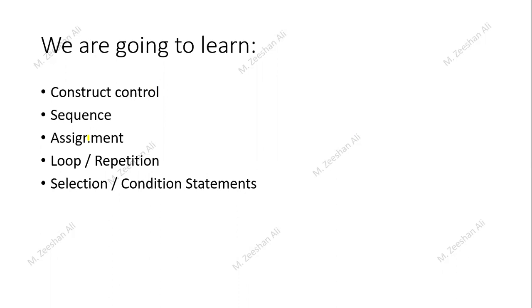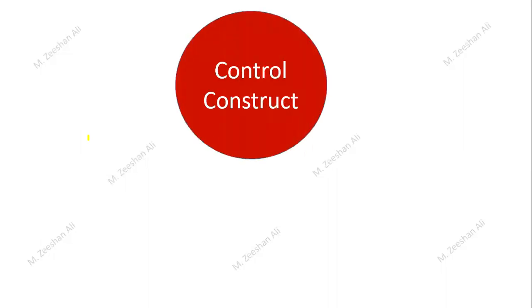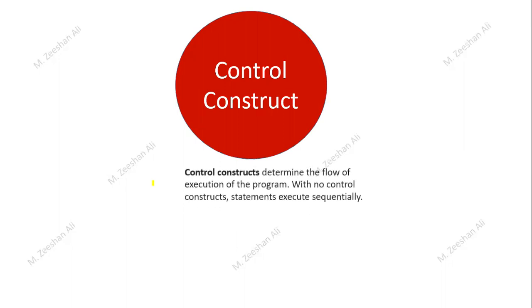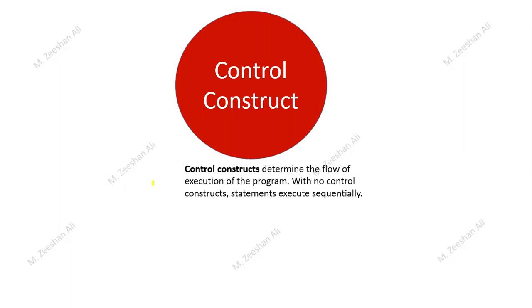Let's begin today's lesson. First, what is meant by a control construct? Second, what are the different components of the control construct? There is sequence, assignment, loop and repetition, selection, and condition statements. The control construct determines the flow of execution of the program.